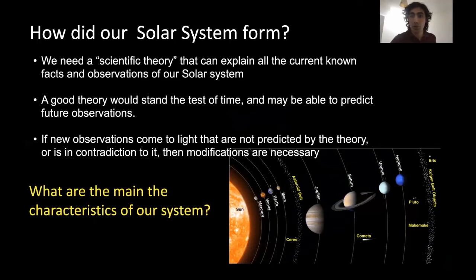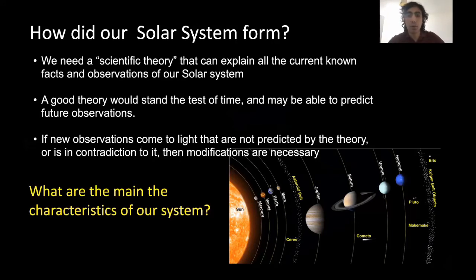Obviously, no one was there to witness the birth of our sun and the formation of the solar system. But what we can do is build a scientific theory or model of how our solar system formed based on its current architecture and the current observations and scientific facts that we know. Just like any other scientific theory, our theory would need to stand the test of time and potentially be able to predict future observations as well. If new observations come to light that are not predicted by the theory, we would need to revise or make some modifications — and that applies to our current theory of solar system formation.